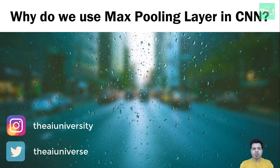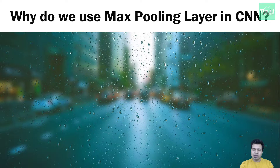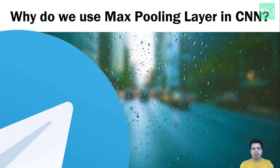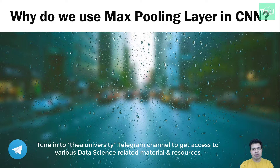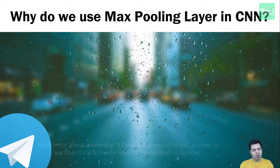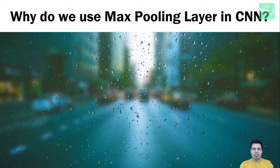If we want our CNN model to recognize an object in an image correctly, even if that object has its features tilted, distorted, with different light composition, textures, etc., I will explain by using an example what I am talking about. So watch this video till the end.